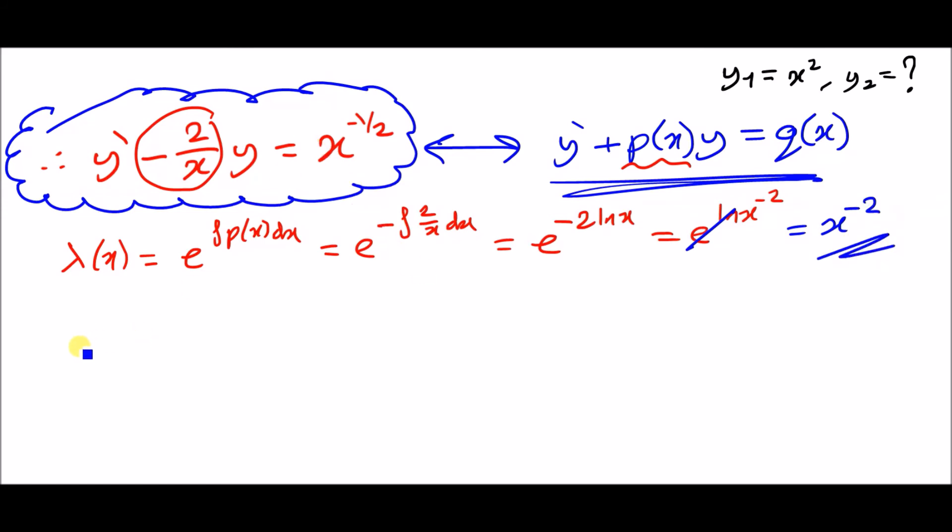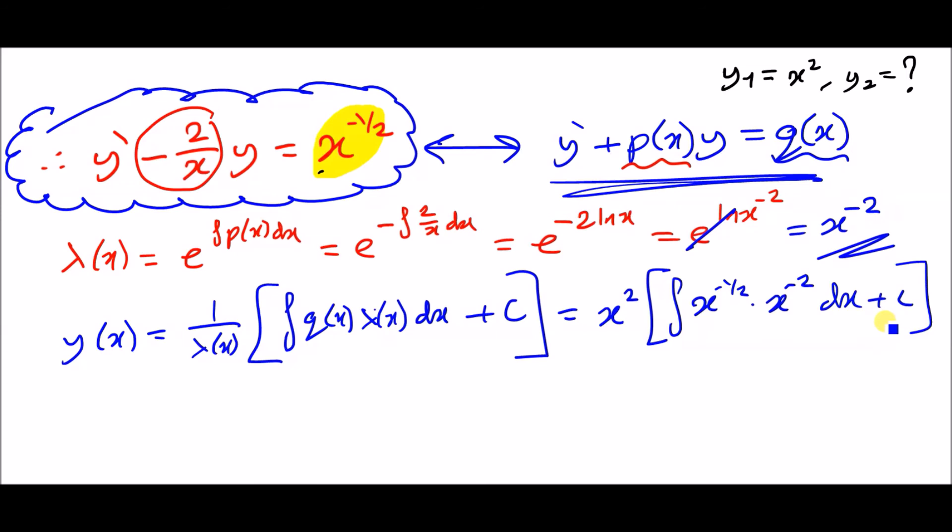Now we find integrating factor. This means that the general solution for first order ODE, which is y(x), equals 1 over the integrating factor times the integral q(x) times your integrating factor dx plus c. Substitute everything back in we're going to get 1 over lambda x, which is just x to the power of positive 2, times the integral of q(x) which is x to the minus half times lambda x which is x to the negative 2 dx.